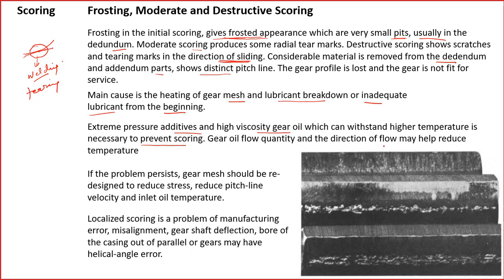Gear oil flow quantity and direction of flow may help reduce temperature. We should not allow gears to heat up and must ensure good lubrication. If the problem persists, the gear mesh should be redesigned to reduce stress, pitch line velocity, and inlet oil temperature. Localized scoring is a problem of manufacturing error, misalignment, gear shaft deflection, bore of the casing out of parallel, or helical angle error — all of which lead to high contact stress and excessive wear.